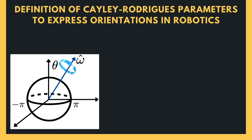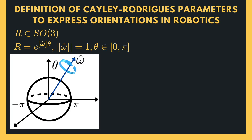Cayley-Rodriguez parameters can be obtained from the exponential representation on SO(3). As we saw in the lesson on the exponential coordinate representation, we have ω̂θ such that R is equal to e to the power of bracket ω̂θ, in which bracket shows the skew-symmetric matrix representation of ω̂, and ω̂ is a unit vector and θ is between zero and π. Therefore, SO(3), or the space of orientations, can be visualized as a sphere of radius π, as you can see in the figure. The exponential coordinates ω̂θ can lie anywhere in the sphere.